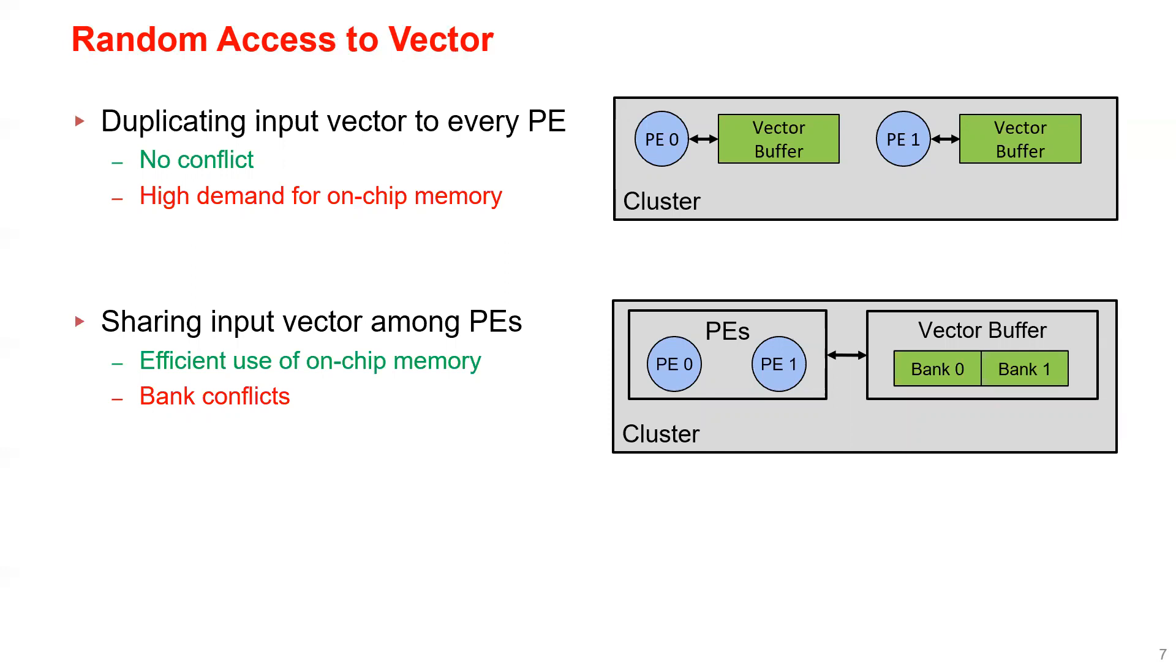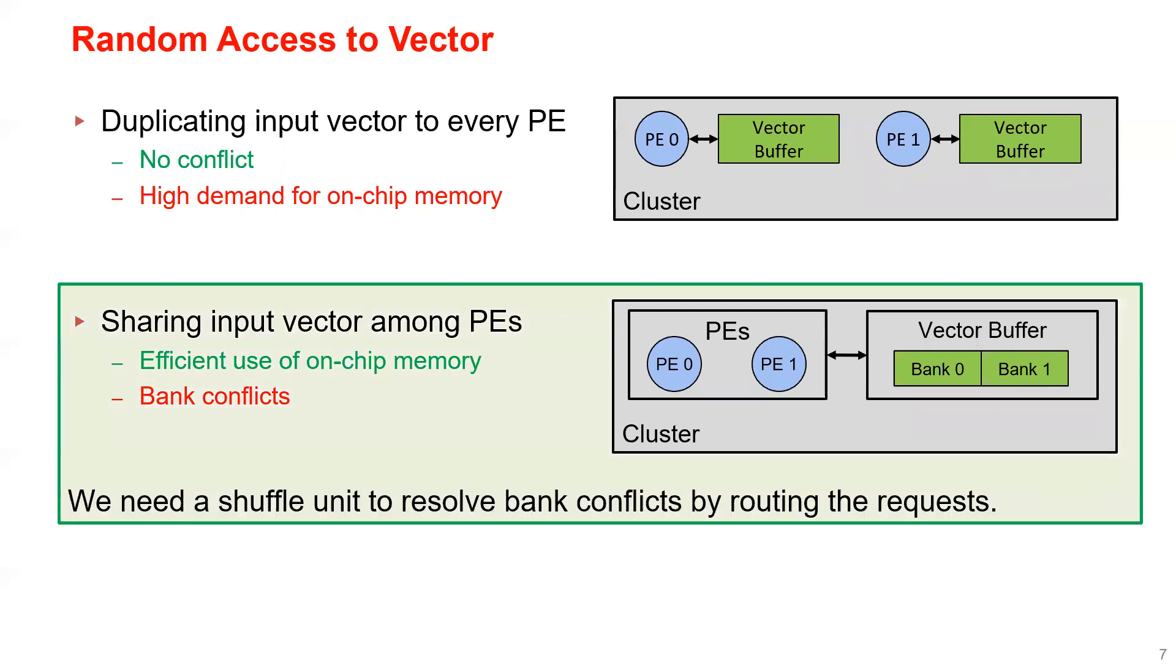An alternative way is to share the input vector among a set of PEs. It preserves an efficient use of on-chip memory, but we need to deal with bank conflicts. We take the latter approach since we have 128 PEs in total, so we want better scalability. Therefore, we need a shuffle unit to resolve bank conflicts by routing the request from the PEs.